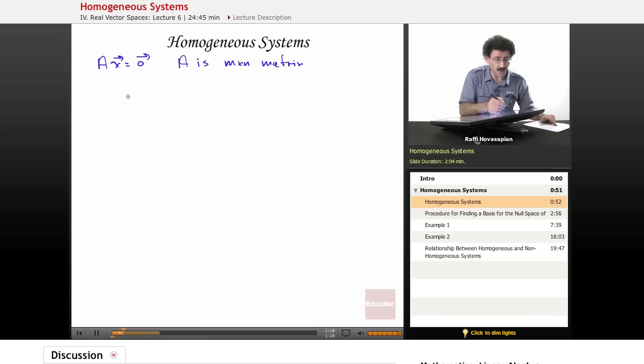because everything on the right hand side is zero. And x is, again, it's a vector. So it is an m by n and by one vector that is a solution to this particular equation.